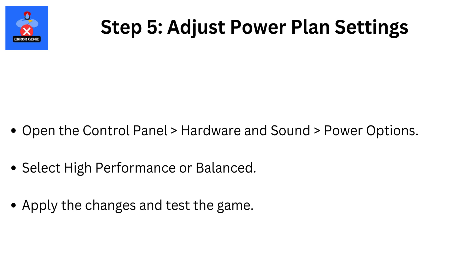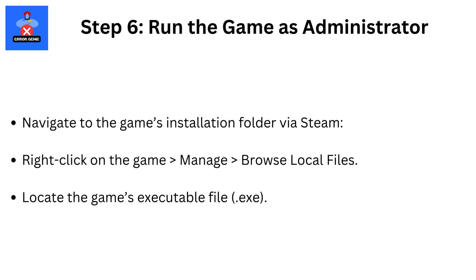Step 5: Adjust Power Plan Settings. Open the Control Panel, then Hardware and Sound, then Power Options. Select High Performance or Balanced. Apply the changes and test the game.